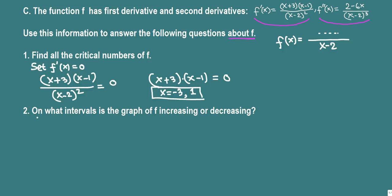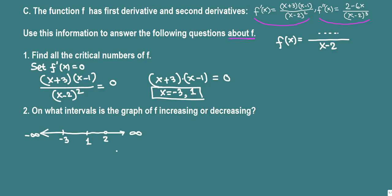Next, we determine on what intervals the graph is increasing or decreasing using an interval test. The domain of the function is all reals except 2, so there is a break at x equals 2. Combined with the critical numbers negative 3 and 1, the domain is divided into four intervals to test.